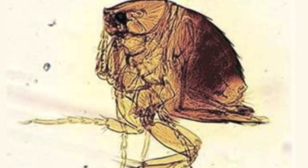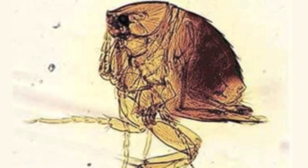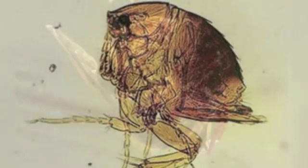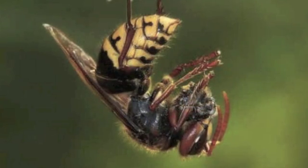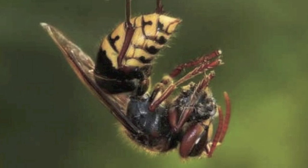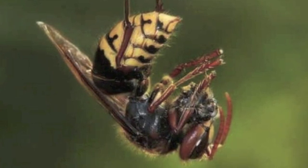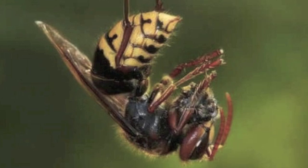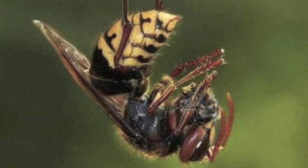Number 21: The chigo flea, also known as jiggers. This parasite, known to be the smallest type of flea, finds its way to a mammal's feet and eats tissue. Number 20: Hymenoepimecis argyrophaga. These parasitic wasps lay their eggs inside their victims, and upon hatching, their larvae consume the host.